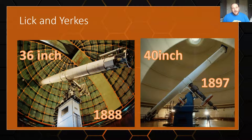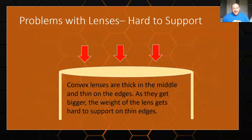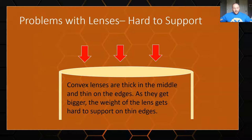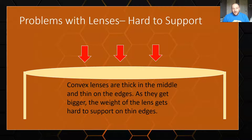The first big problem with refractors is that these lenses get exceedingly hard to support. They're convex — thick in the middle and thin on the edges. As the lens gets very large, it's like putting a big piece of glass on an exceedingly large trash can: you're supporting a thick piece of glass by thin little edges, and the glass can actually bend and potentially break. So you can only make your scope so big before it collapses in on itself.